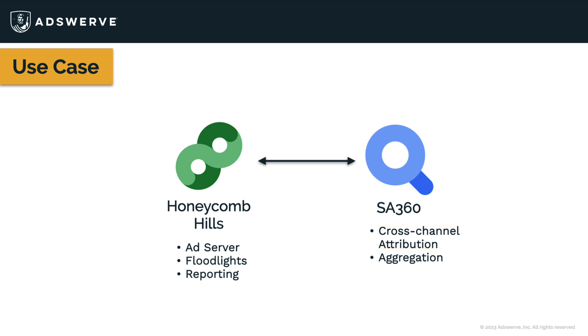This step will provide the link needed between CM360 and SA 360. They'll share the same floodlight configuration, which will allow for cross-channel attribution. And this one-to-one relationship will allow SA 360 data to flow into CM360 so that you can report on it within the Reporting and Attribution module.